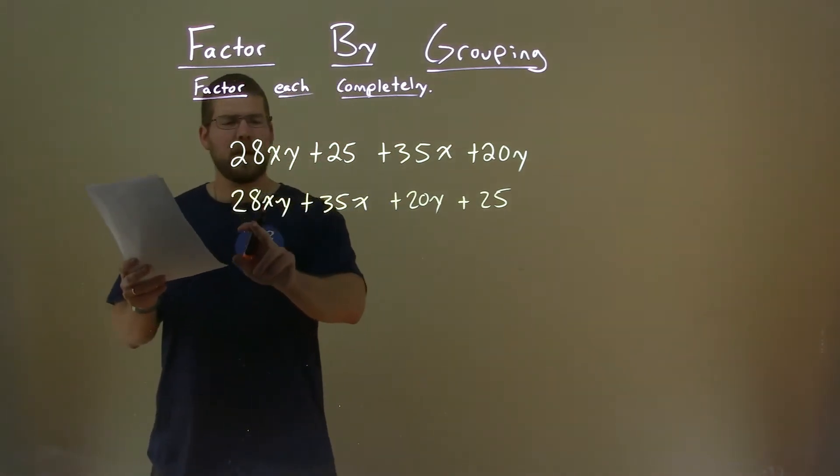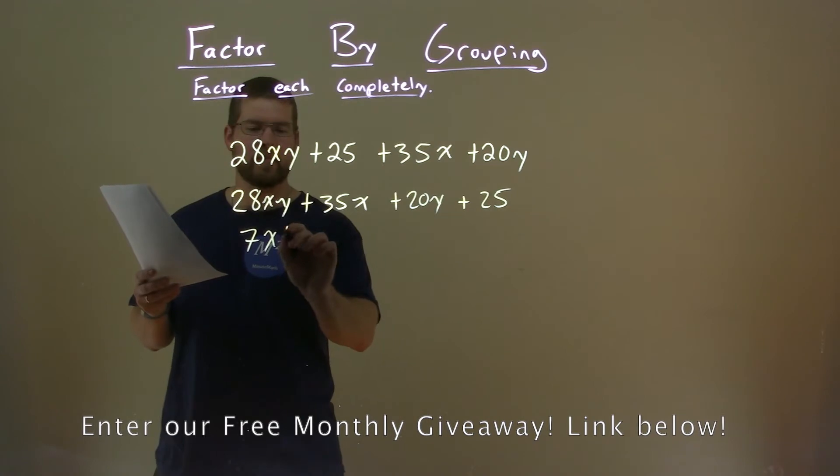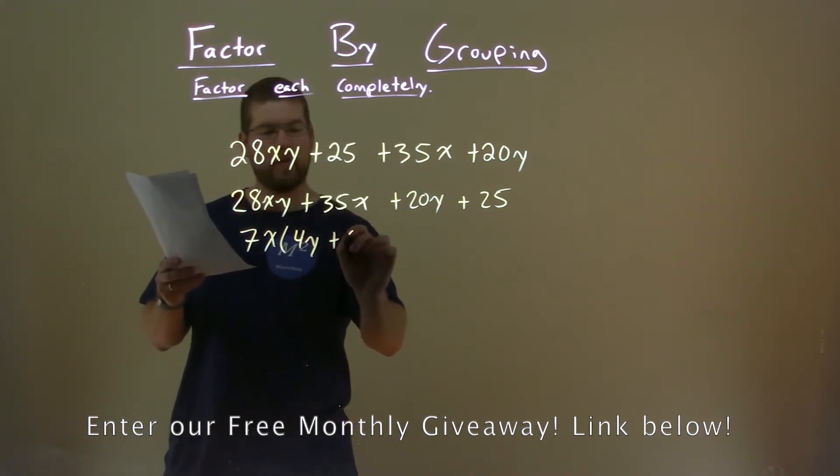Well, we have 28xy and 35x. 7 goes into 28 and 35, and x goes into both of these as well. So, if we pull out a 7x, we're left with a 4y plus a 5.